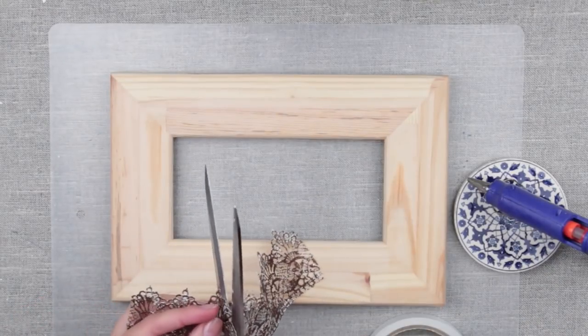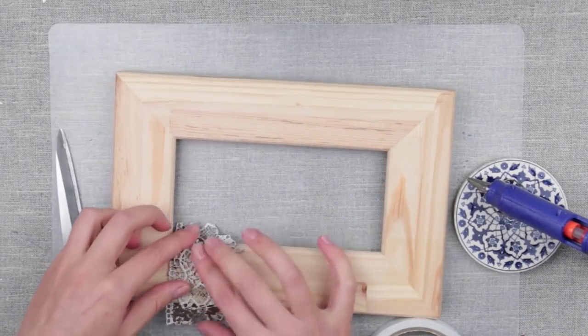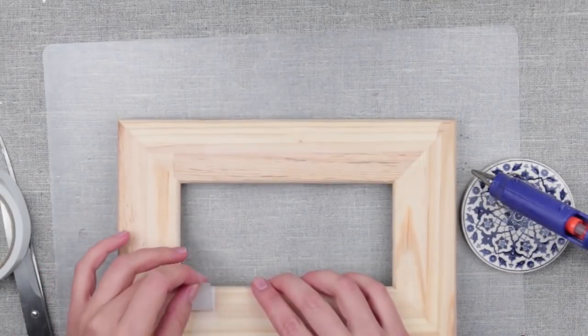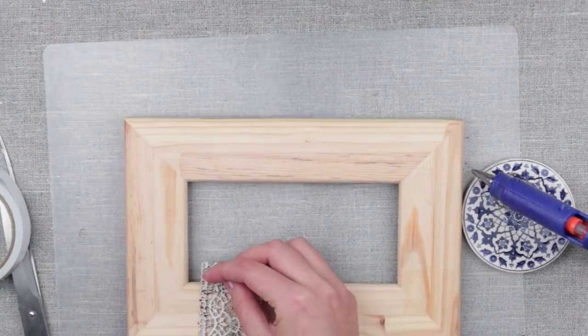Cut out the lace of proper length and embellish the frame. Secure with double-sided tape as it's a quick, safe, and neat means.